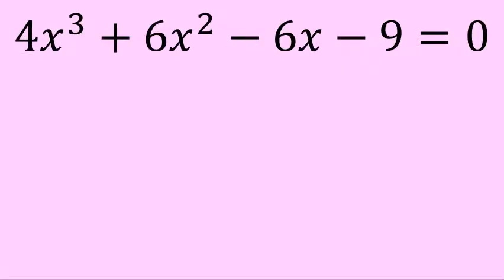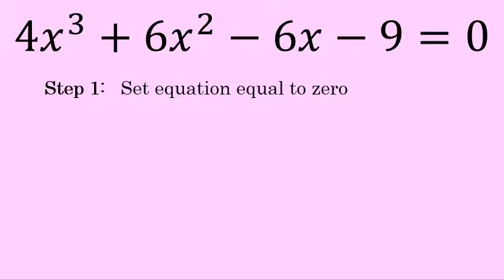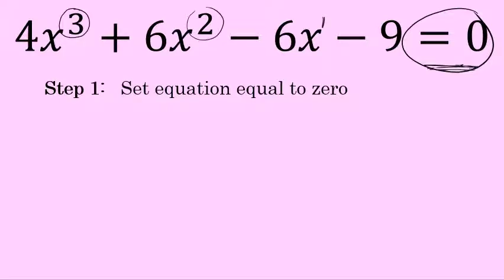The first step in the factor-by-grouping method is to set the equation equal to 0. In this example problem, the equation is already equal to 0. But if it were not, you would add or subtract the terms to both sides of the equation so that it's set equal to 0. Additionally, you want to write the terms in decreasing degree: x to the third power first, then x to the second, then x to the first, and then the constant. In our problem, since it's already equal to 0, step 1 is done.